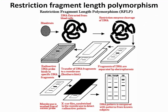RFLP, or Restriction Fragment Length Polymorphism, is used in forensic science. If we have a blood stain, we extract the DNA, use restriction enzymes to cleave the part of DNA we want to analyze, insert it into a gel and separate by gel electrophoresis. We use Southern blotting to transfer DNA fragments to a membrane, add a radioactive DNA probe to hybridize the DNA, and put it on an X-ray film to detect a radioactive pattern identifying the individual.